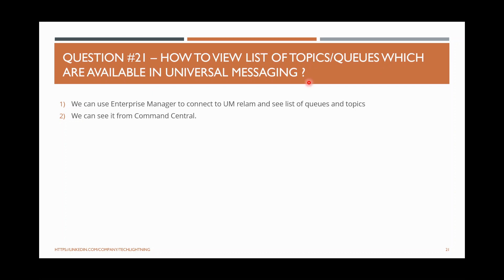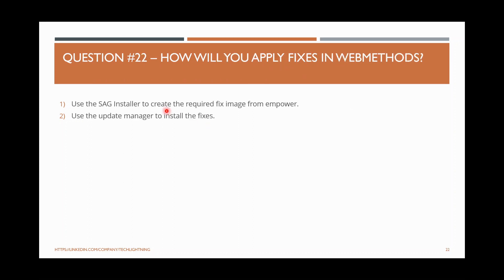How to view the list of topics and queues available in Universal Messaging? Universal Messaging is a messaging provider where messages can be sent and received. You can use the Enterprise Manager application — connect to your UM and you will be able to see the list of queues and topics available. Another way is Command Central — if you have already added the Universal Messaging component for monitoring, you can go to Universal Messaging and select Administration to see the list of queues and topics.